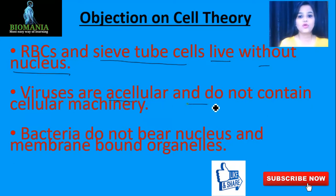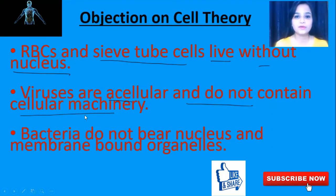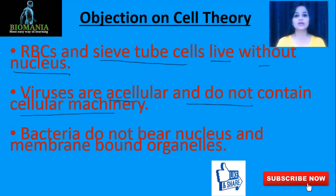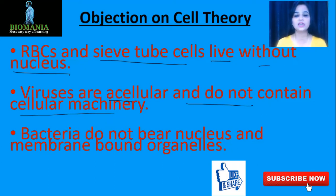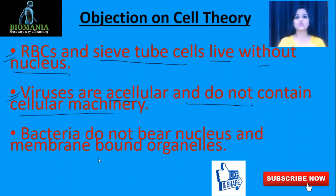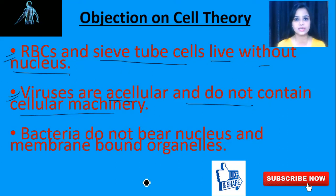The second objection: viruses are acellular and do not contain cellular machinery. Viruses are between the link of living and non-living — they can behave as living when they get suitable conditions, and as non-living when environmental conditions are against them; they are a connecting link between the two. The third objection: bacteria do not have a nucleus or membrane-bound organelles. Bacteria, which means we're talking about prokaryotes, have their genetic material completely free in the cytoplasm with no boundary around it and no membrane-bound cell organelles.